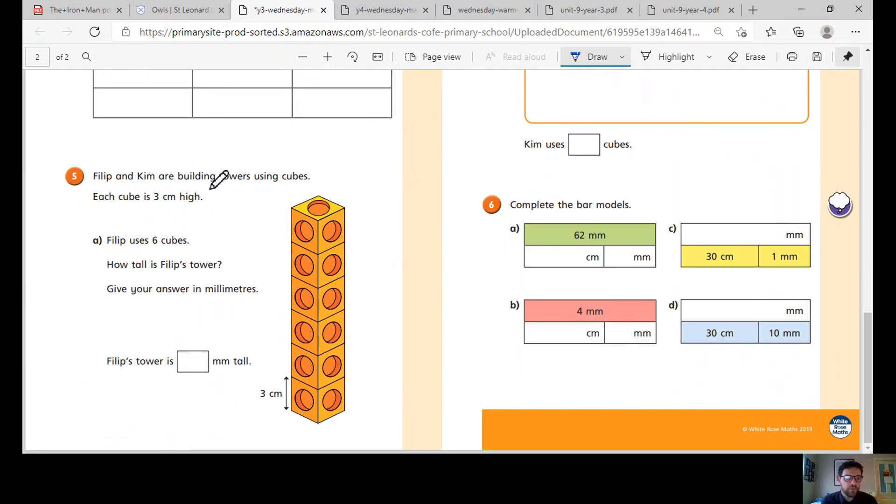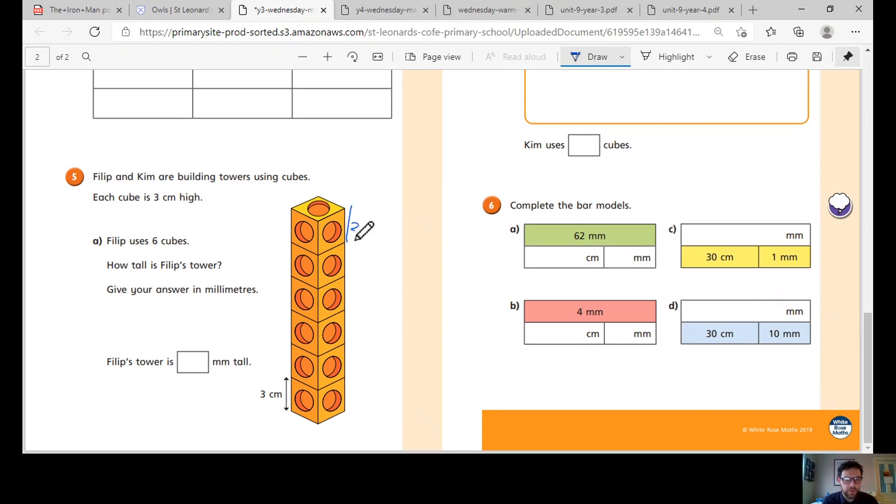Philip and Kim are building towers using cubes. Each cube is three centimetres high, so that means from here to here, three centimetres. Philip uses six cubes. How tall is Philip's tower? So we need to do six cubes. If each one's three, six times three, gives you around 18 centimetres.